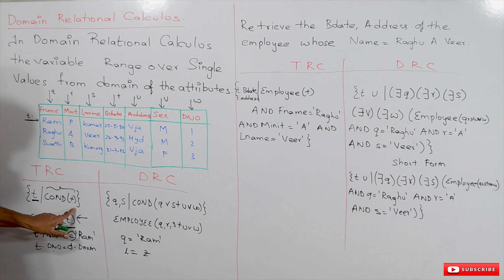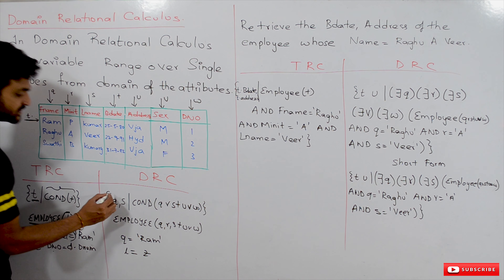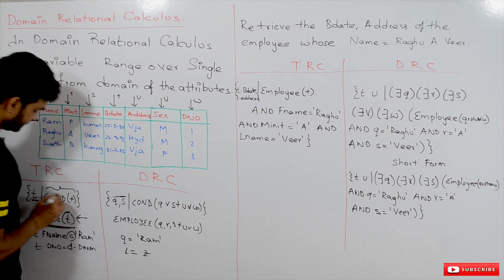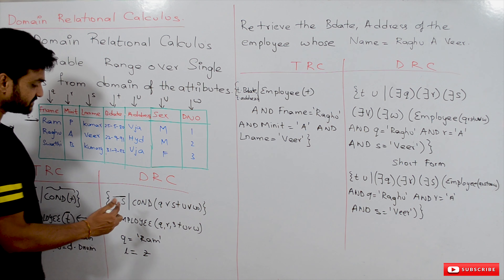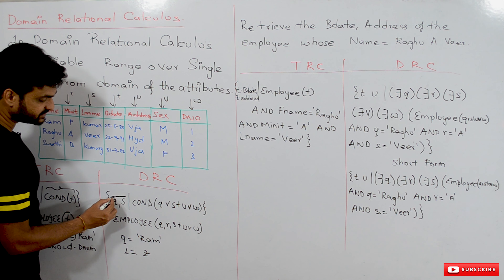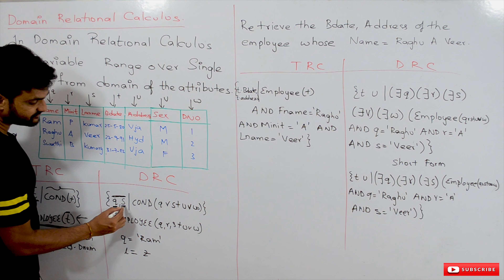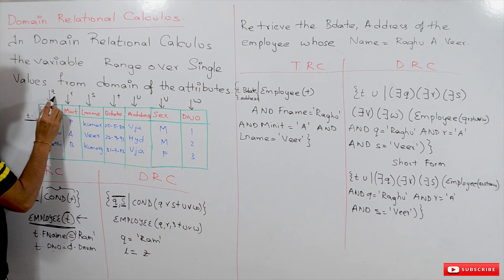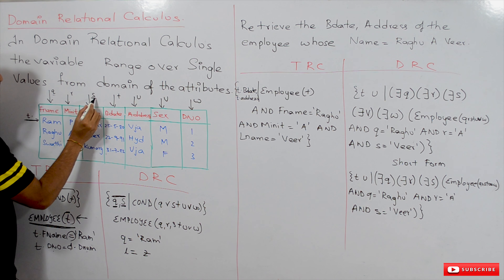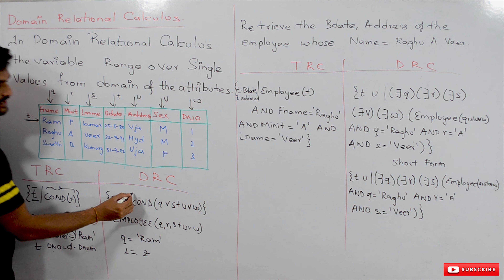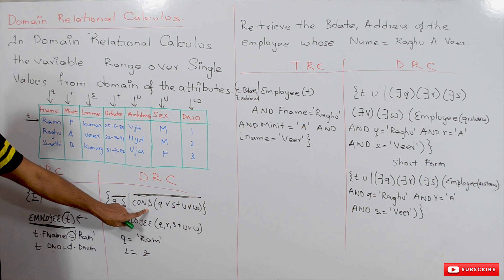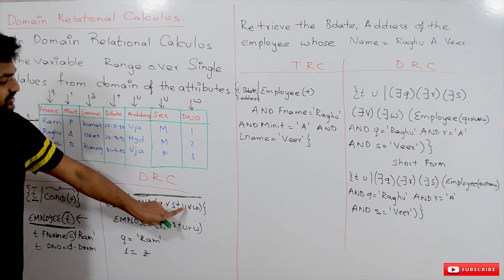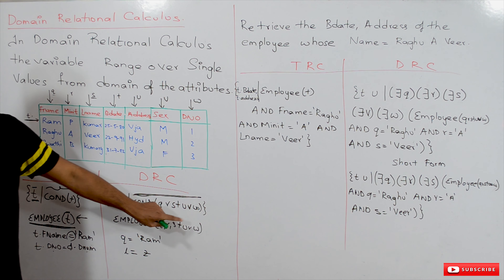Coming to domain relational calculus: the variables on the left side of the bar are called free variables, and the variables on the right side of the bar are called bounded variables. The variables that need to be displayed are given for the domain. For example, q and s represent fname and lname — we want to display the values of fname and lname. The conditions are applied on variables q, r, s, t, u, v, w — these are the names of the domain variables of the relation.